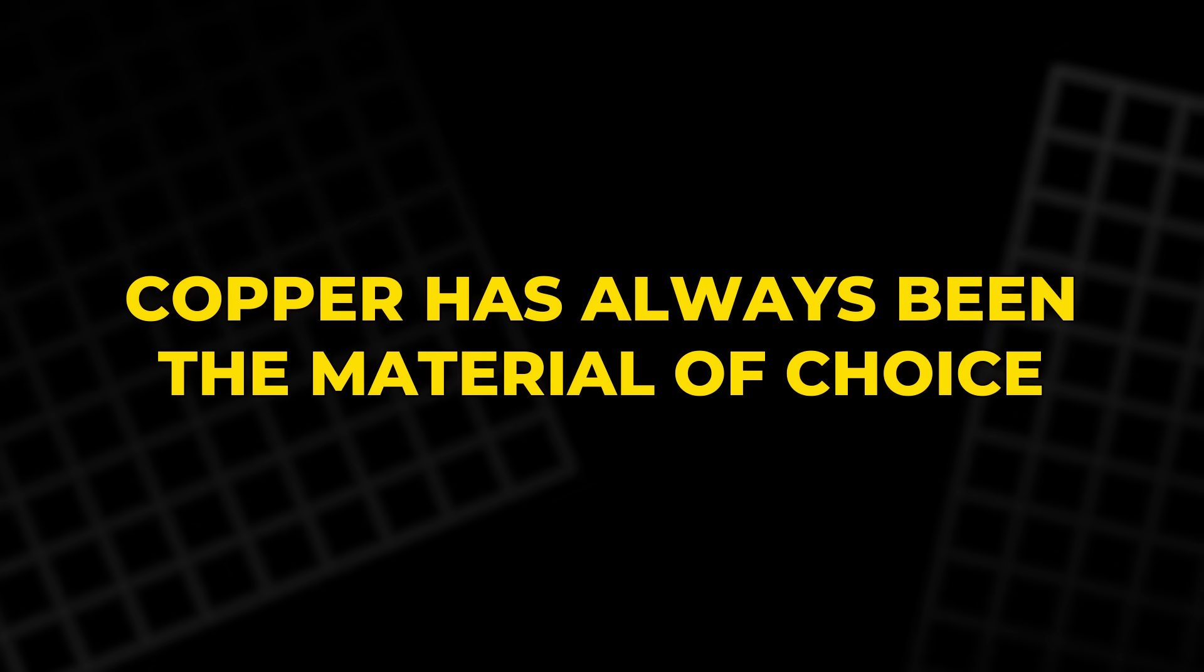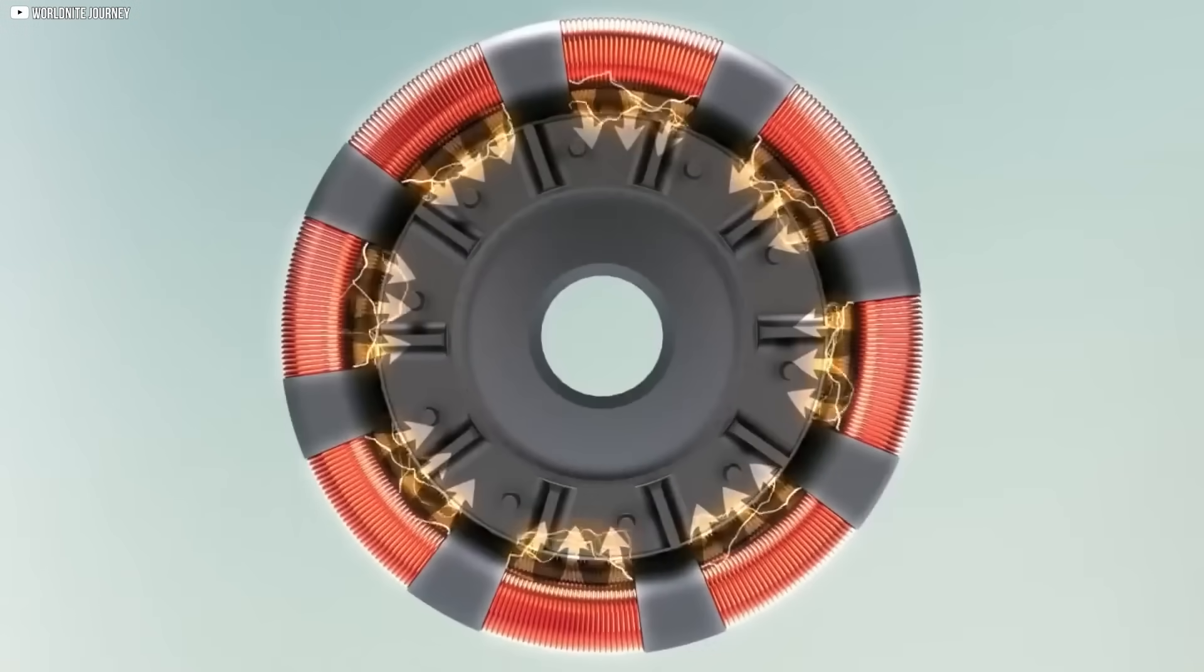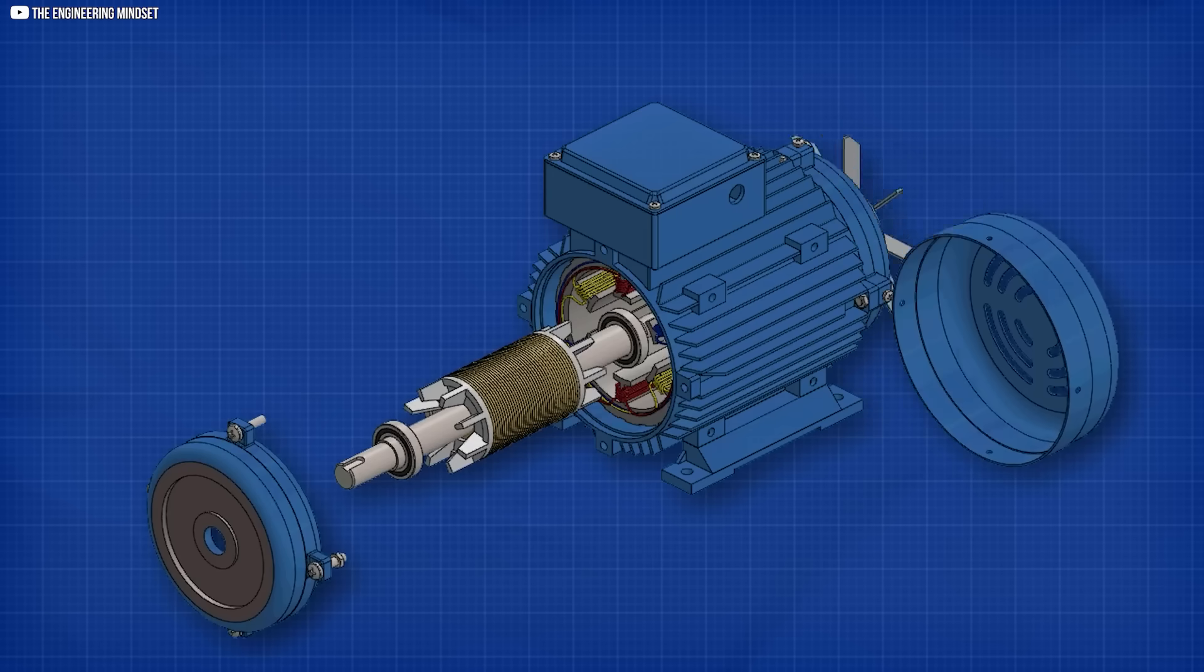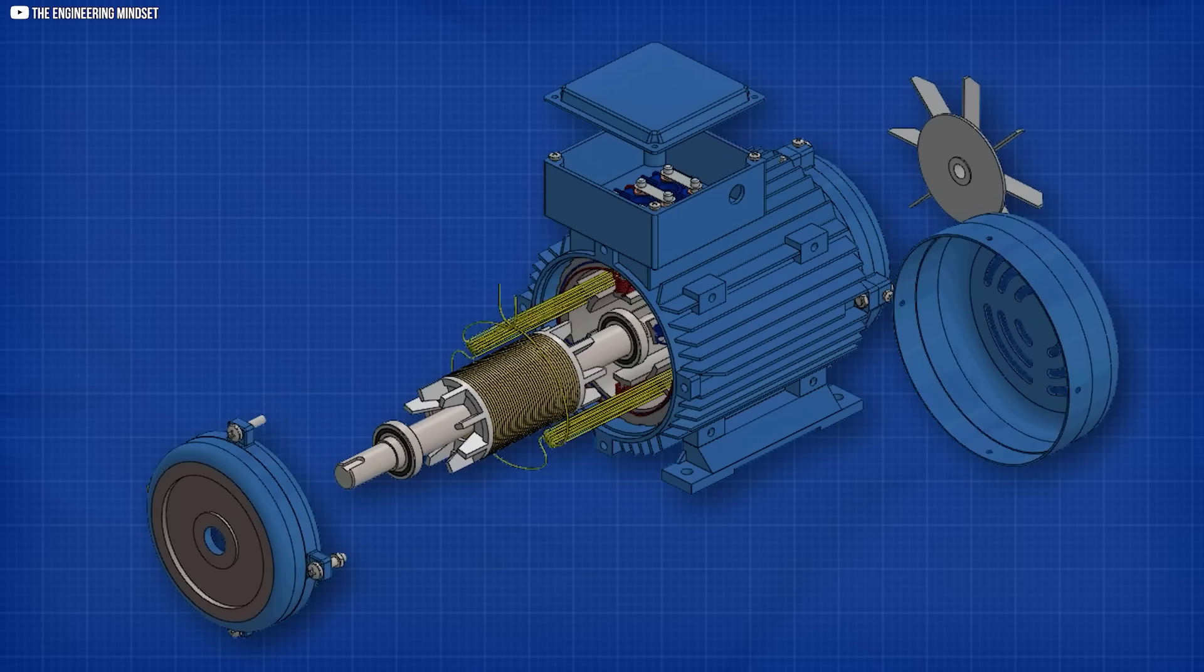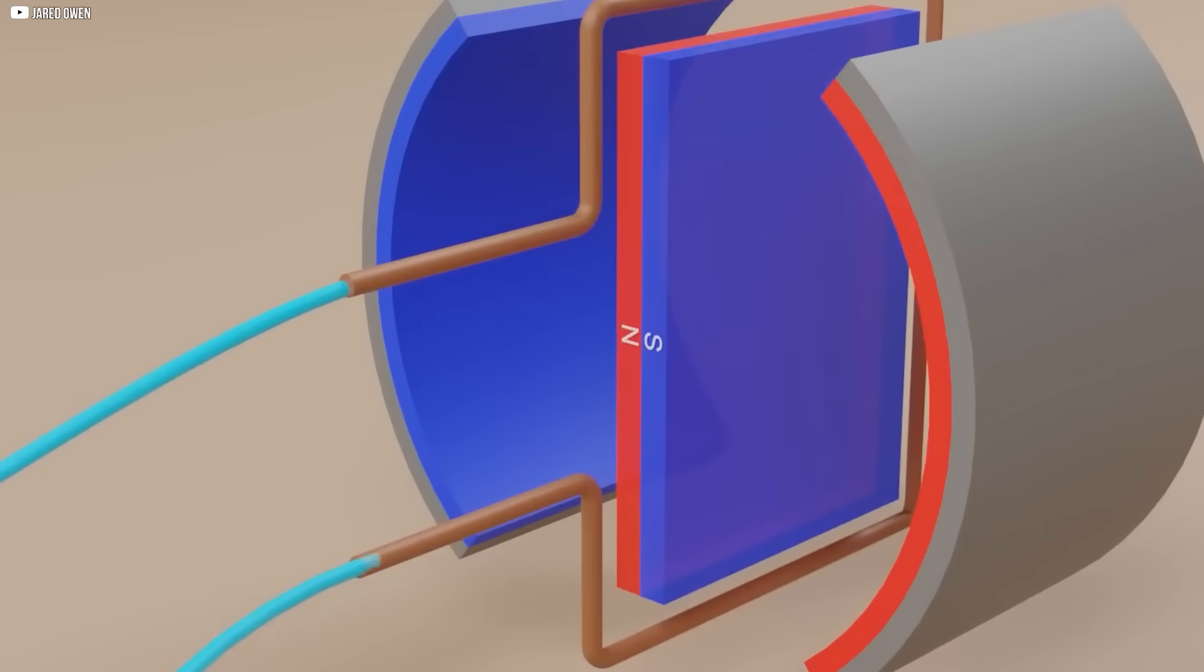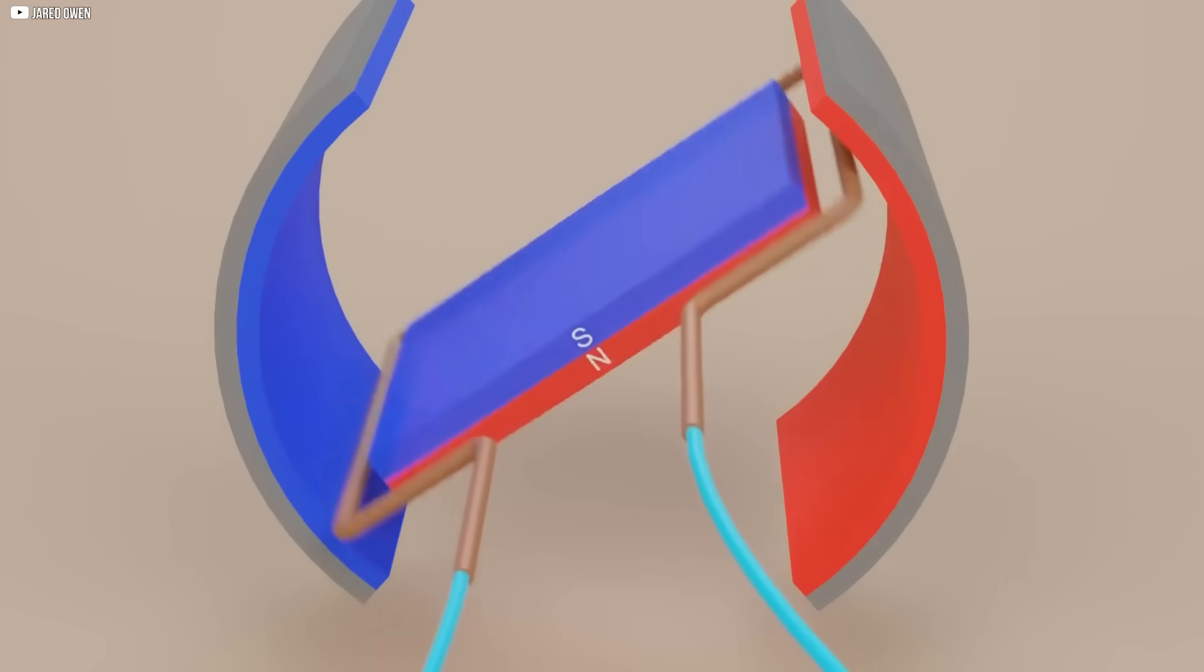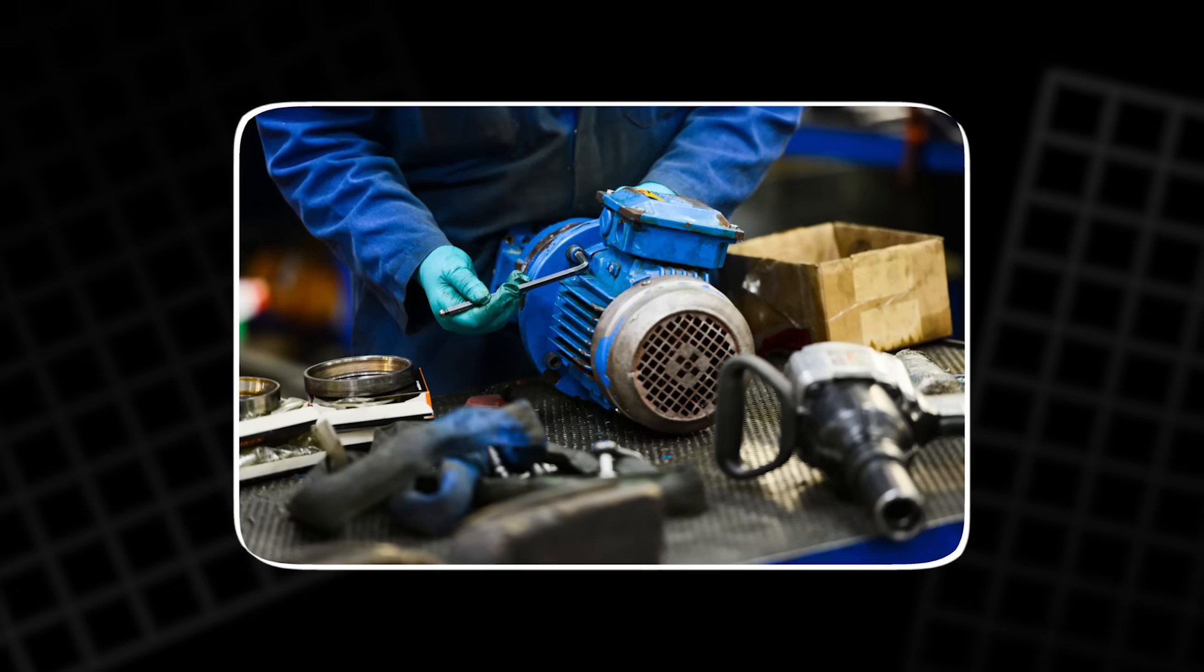Copper has always been the material of choice. It's highly conductive, meaning electrons can flow through it with ease. It's durable, predictable, and well understood. Aluminum is sometimes used too, especially when weight matters more than perfect efficiency. But both metals come with trade-offs.